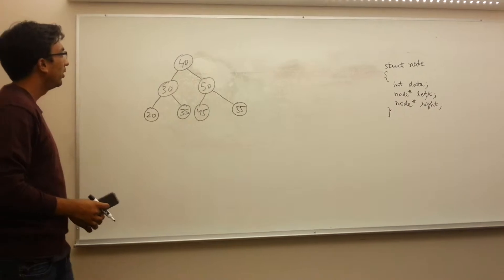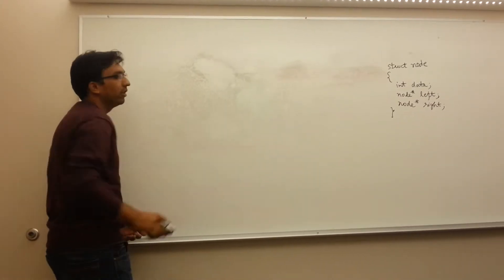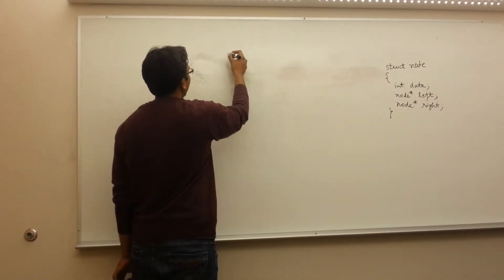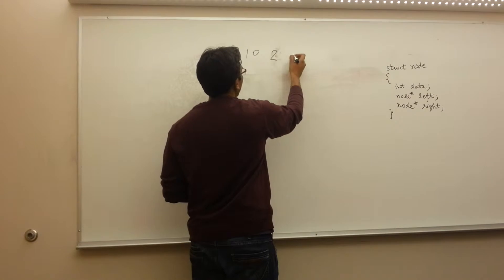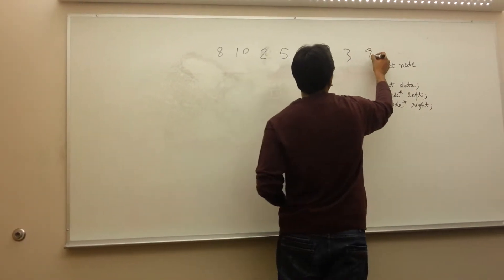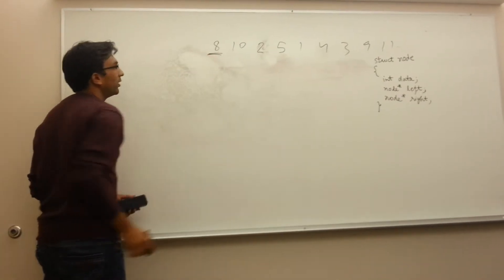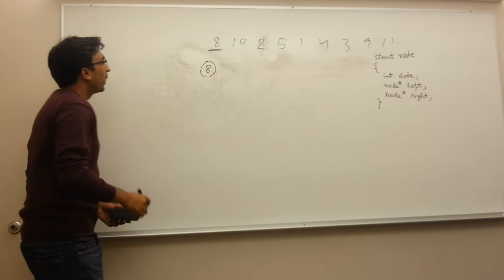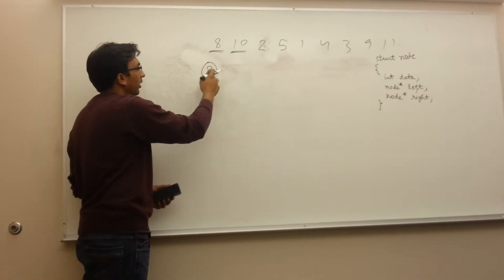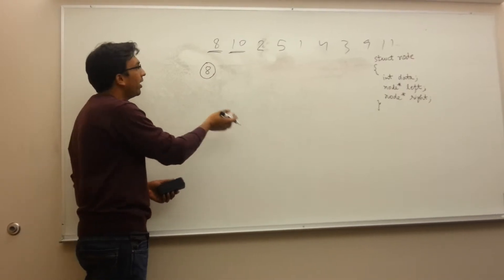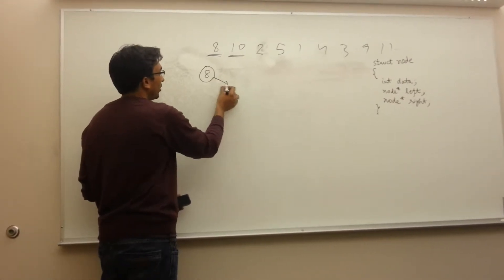Now if we discuss insertion in this tree — how will we insert an element in a binary search tree? Suppose our elements are 8, 10, 2, 5, 1, 4, 3, 9, 11. The first element will be considered as the root, so we will have 8. The next element to be inserted is 10. We compare it with the node — if it is larger it goes right, if smaller it goes left. Since 10 is greater than 8, it will come towards the right side. We then take 2, compare with the root — since 2 is smaller than 8 it goes left, and since 8 has no left child, we insert it directly.